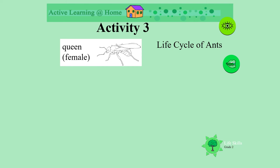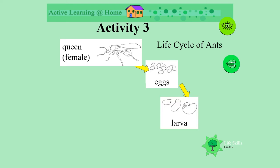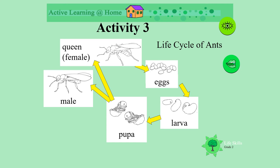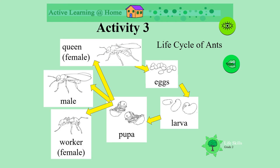In the life cycle of ants, we start with the queen. She lays the eggs. The eggs grow into larva. The larvae turn into the pupa. The pupa changes into different ants. Some of the pupa become queens, and these queens fly away to begin new nests. Some become male ants, which are used for breeding, while most of them become female worker ants.